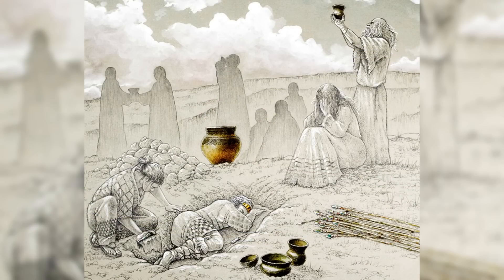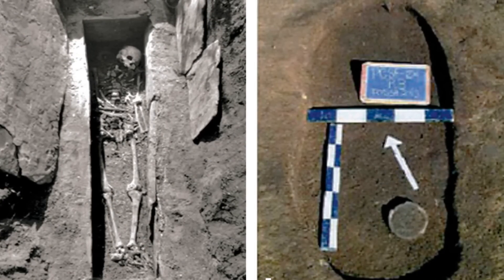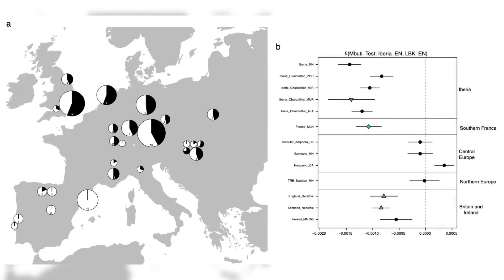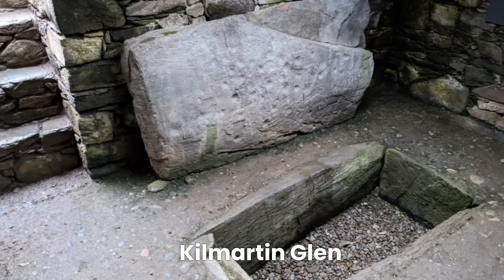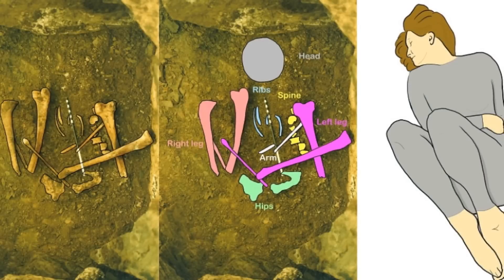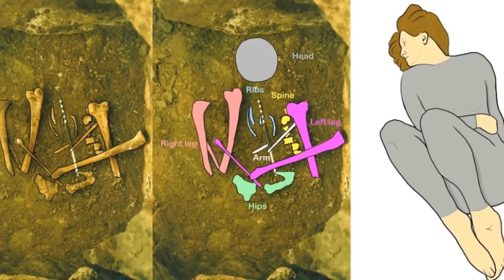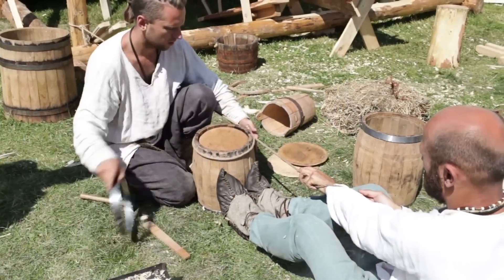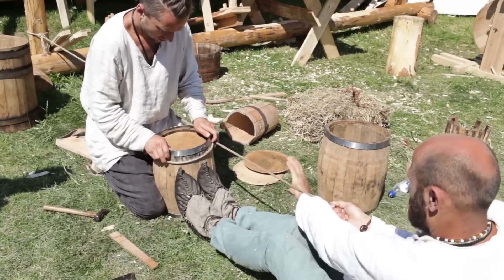The arrival of the Beaker culture around 2500 BC introduced further genetic and cultural changes. The Beaker people are associated with distinctive pottery styles, metallurgy and new burial practices. Genetic studies have demonstrated that the Beaker people brought significant amounts of steppe ancestry into Britain. Excavations at sites like Kilmartin Glen in Argyll have unearthed Beaker burials with grave goods, and the Achaavanich Beaker burial in Caithness has offered insights into the health, diet and origins of Beaker individuals, suggesting this migration significantly altered the genetic landscape.